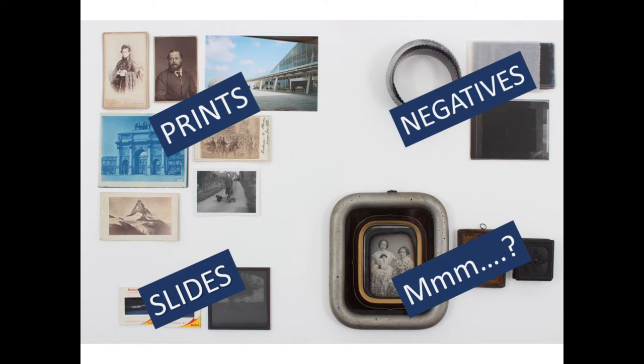Dealing with prints is sort of comforting because they look familiar and are usually what is addressed first, be it for cataloguing or storage. Negatives and slides might be next. But if you're not used to dealing with a photographic collection, this final group in the bottom right corner might make you feel a bit more out of your comfort zone in terms of identification, care and making a digitised image.